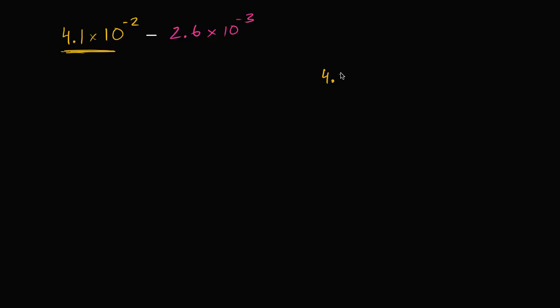So we have 4.1 times 10 to the negative 2. Well, if we want 10 to the negative 2 to go to 10 to the negative 3, we would divide by 10. But we can't just divide by 10, that would literally change the value of the number. In order to not change it, we want to multiply by 10 as well. So we're multiplying by 10 and dividing by 10. I could have written 10 over 10 times this.